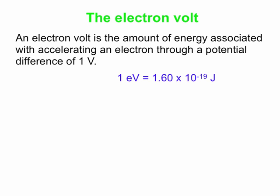One electron volt happens to be 1.6 times 10 to the minus 19 joules. You've seen a number like this before with different units — the charge on the electron in coulombs is 1.6 times 10 to the minus 19 coulombs. That's not a coincidence. You take the charge multiplied by the voltage, and you've got energy units. In joules it's 1.6 times 10 to the minus 19, and in electron volts it's simply 1.